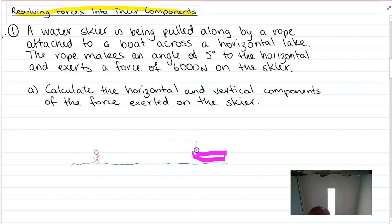Here's my tow pole, here's my rope which is meeting the tow pole. And here's my angle of 5 degrees, so the rope is making an angle of 5 degrees with the water. 6000 newtons is being exerted on the skier along that line. Calculate the horizontal and vertical components of the force exerted on the skier.